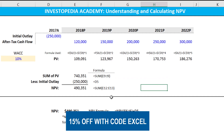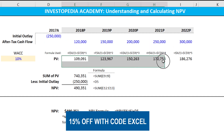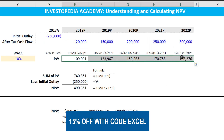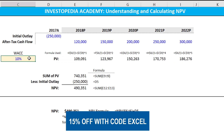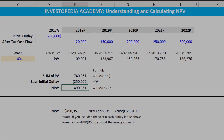So that is how you create a net present value in Excel. To recap: you put in your initial outlay and your after-tax cash flows, you discount each after-tax cash flow by the weighted average cost of capital raised to the period, you sum up the present values, you subtract the initial outlay, and you get the net present value.